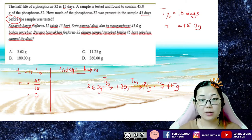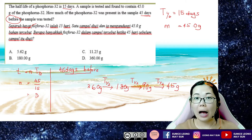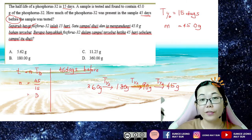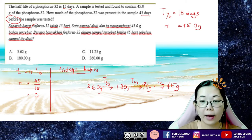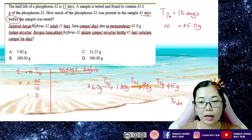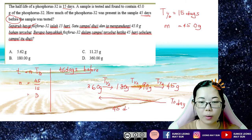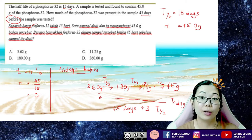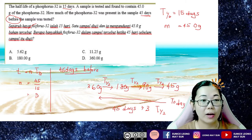So today 45g was found. 45 days before, which is equivalent to 3 half-lives back, the initial mass of phosphorus-32 was 360g.